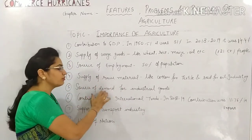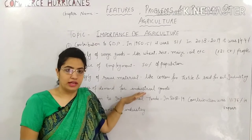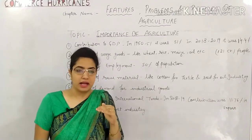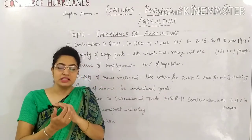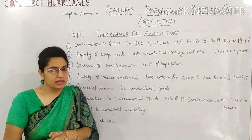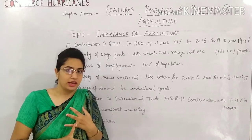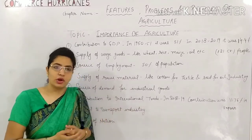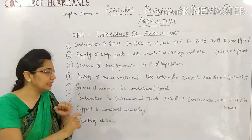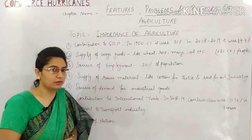Next is the Source of Demand for Industrial Goods. Industrial goods are heavy industry products, capital goods, and heavy machines. The agricultural sector creates demand for these machines. What do you need in agriculture? You need a tractor, a combine harvester — these come from industries. So the agriculture and industrial sectors are linked and both are important.